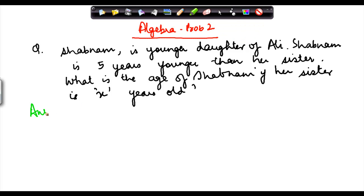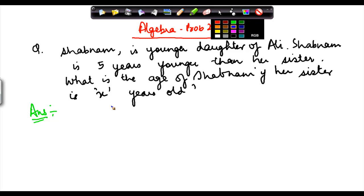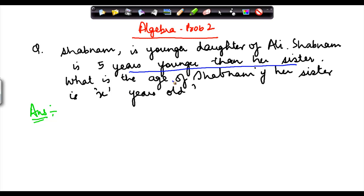So here, basically I have been given a question where I have been told that Shabnam, who is one of the girls in the town, is the younger daughter of Ali. Shabnam is five years younger than her sister. So if Shabnam's age is denoted by s, then s is equal to five years younger — younger means smaller — than her sister.